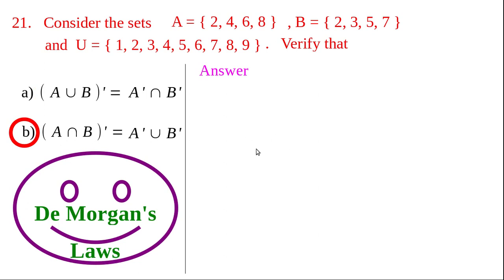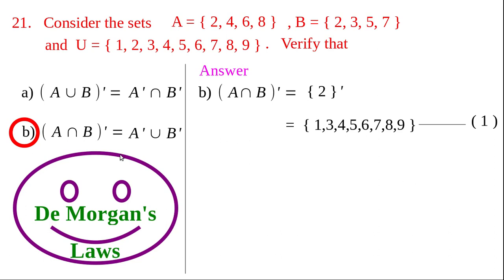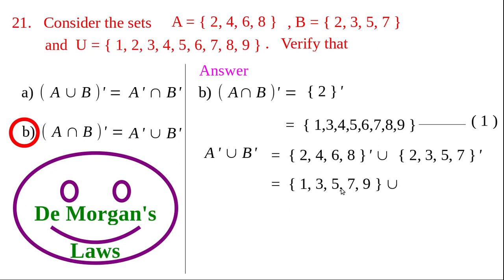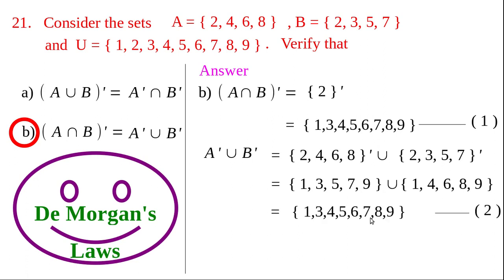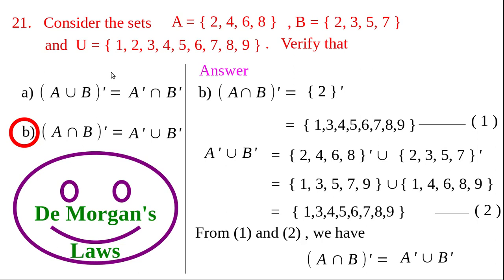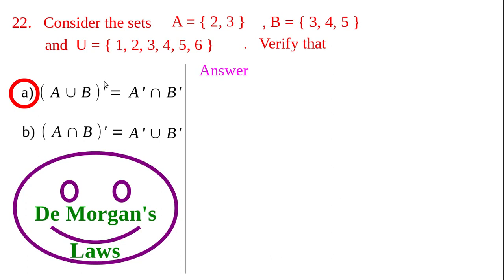For question (b): verify (A intersection B) whole dash equals A dash union B dash. A intersection B equals {2}, and its complement is the first equation. Then find A dash union B dash: A dash is {1, 3, 5, 7, 9} and B dash is {1, 4, 6, 8, 9}, and their union forms the second equation. The right-hand sides of equations 1 and 2 are the same, therefore (A intersection B) whole dash equals A dash union B dash.